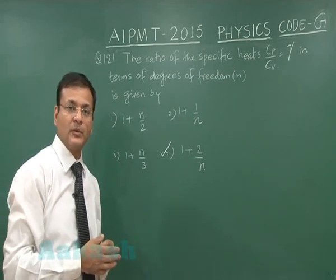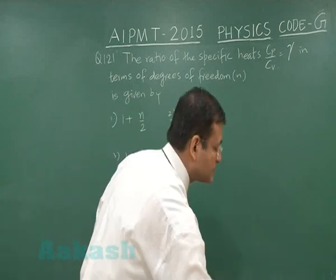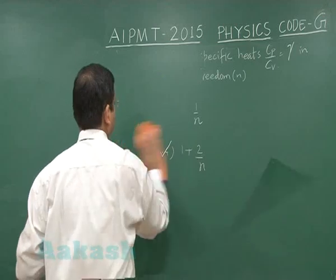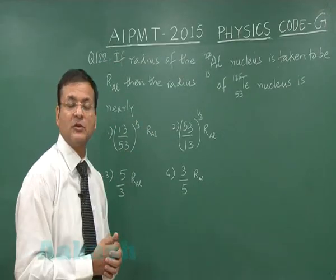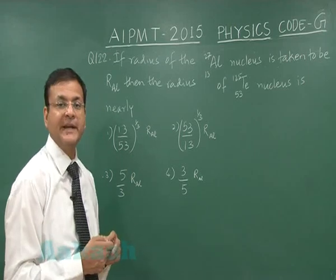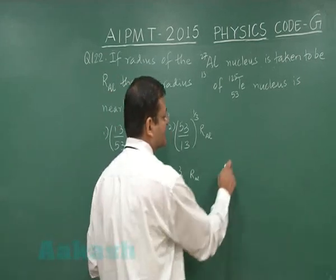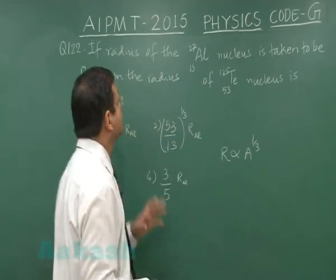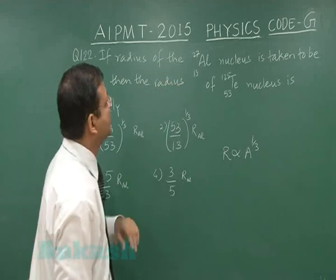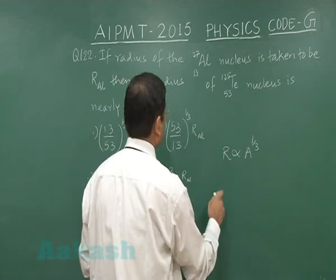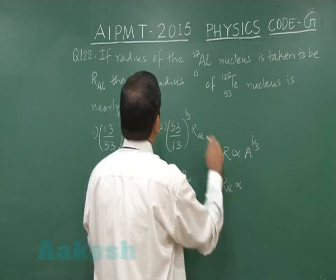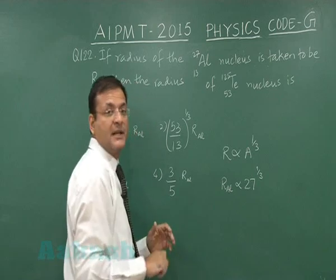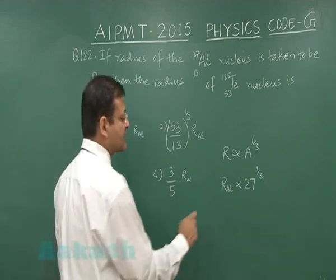Now question 122 is based on the chapter nuclei. This is related to nuclear radius. Nuclear radius is proportional to A raised to the power 1/3, where A is mass number. The radius of the aluminum is R_Al, proportional to 27 raised to 1/3. For tellurium, radius R is proportional to 125 raised to 1/3.